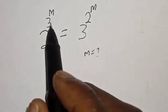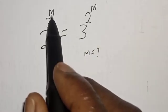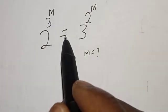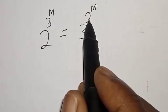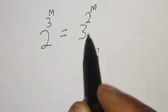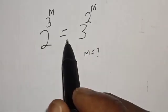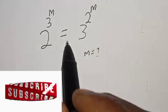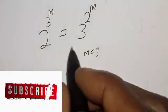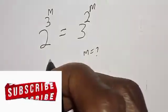2 raised to power 3 raised to power m is equal to 3 raised to power 2 raised to power m. Before we proceed, please don't forget to like, share, comment and subscribe. Thank you.